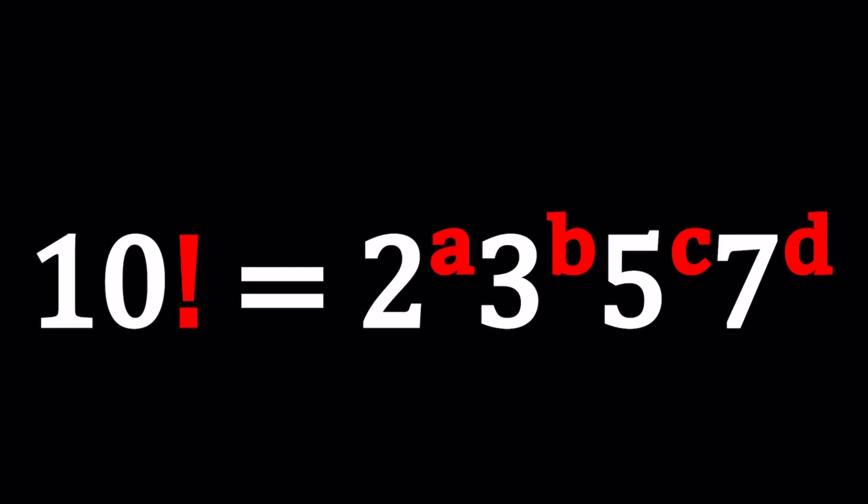Hello, everyone. In this video, we're going to be solving a very nice number theory problem. We have 10 factorial equals 2 to the power A times 3 to the power B times 5 to the power C times 7 to the power D.